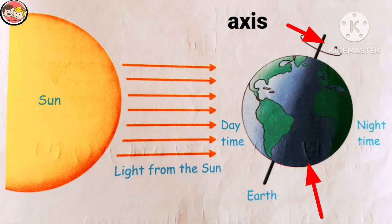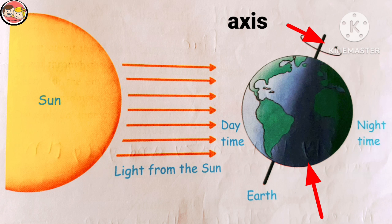We think the sun moves around the earth, but no — the fact is the earth moves around the sun. The sun doesn't move. I repeat: the earth moves around the sun. It rotates on its axis, and that is why we have day and night.